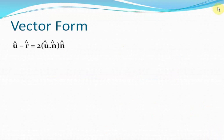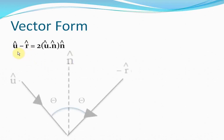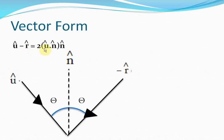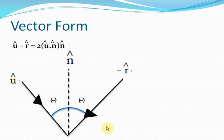Now let's study the laws of reflection in vector form. We can represent the first law of reflection in vector form as: û minus R̂ equals 2(û · N̂) N̂. I know it seems very complicated, but it isn't. û is the unit vector representing the incident ray, R̂ is the unit vector representing the reflected ray, and N̂ is the unit vector representing the normal to the surface of the mirror.